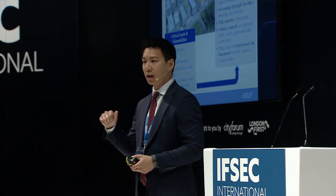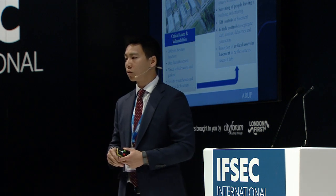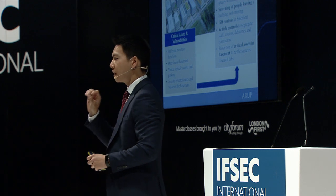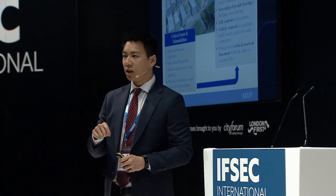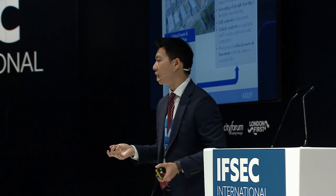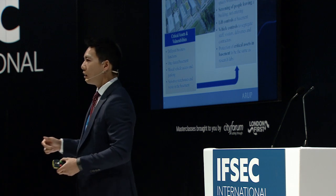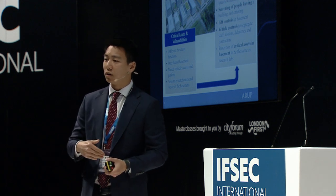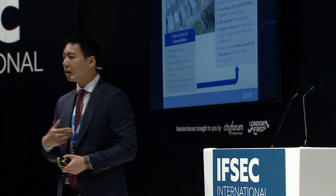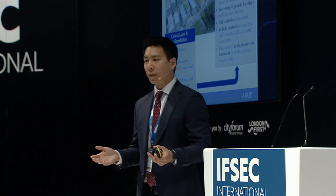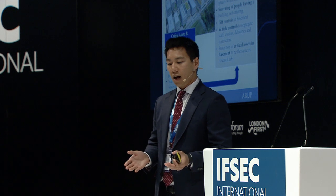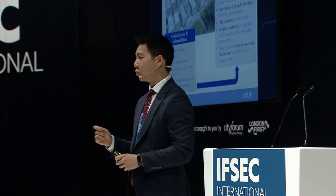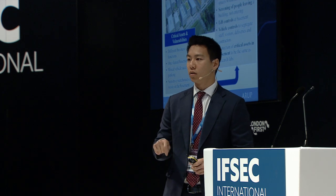We helped them assess those vulnerabilities and inform design mitigations. One example was appropriate access rights according to each building, user group, and business function — not only per building but also for sensitive spaces within buildings. Screening of people leaving rather than entering is an interesting one: their concern was insider threat and data leakage, so they were more worried about staff, contractors, or sub-consultants leaving with IP. We also recommended lift controls at the basement level to prevent circumvention of security, vehicle control measures to segregate all user groups, and equal levels of protection for critical assets in the basement as those above.